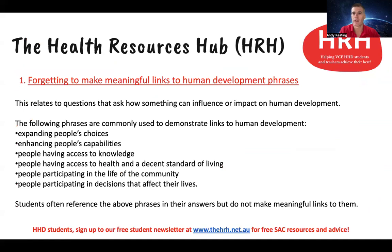I'm going to go through five different examples of common mistakes to avoid that are relevant to Unit 4 Area of Study 1. The first one is forgetting to make meaningful links to human development phrases when there's a question asking about how something might impact on human development. If there is a question asking how something can influence or impact on human development, you need to mention one or more of the phrases from the human development definition, such as expanding people's choices or enhancing people's capabilities.